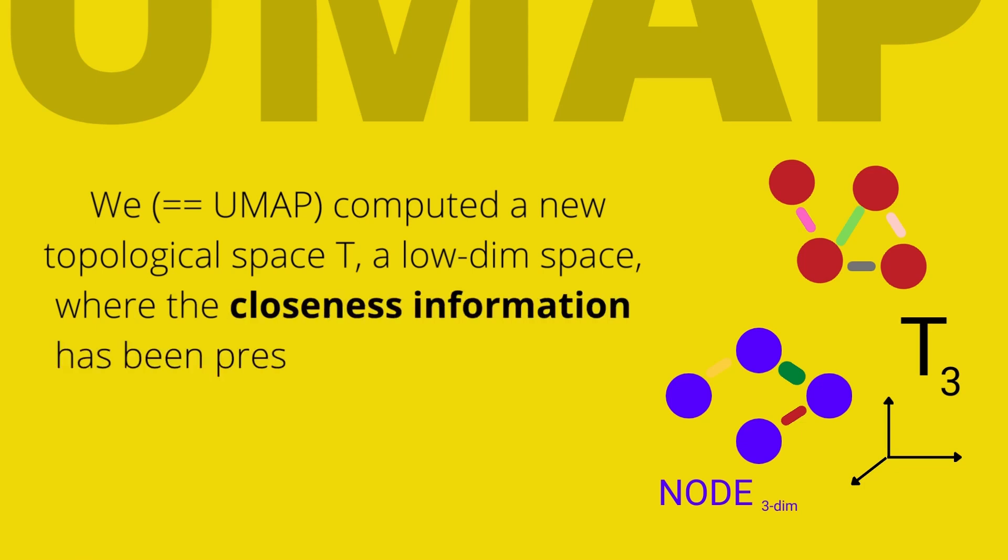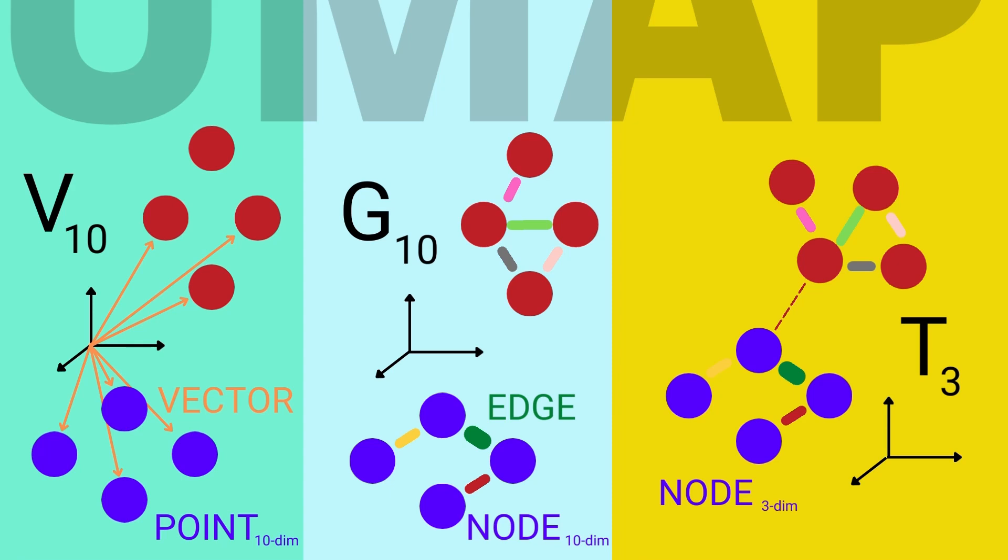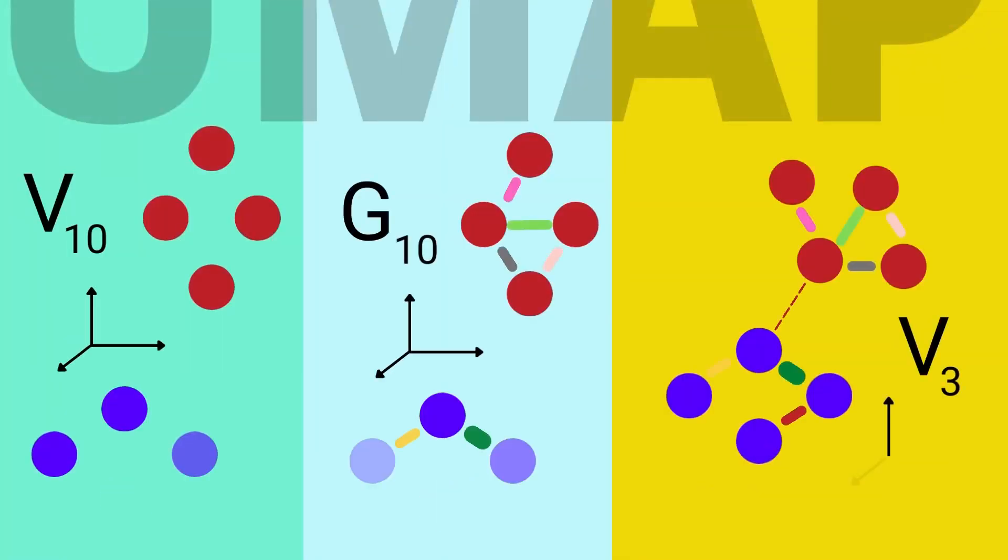In a new topological space the closeness information has been preserved. And if you waited till now you see that those two sets of data points are connected because we want to have a connected component.